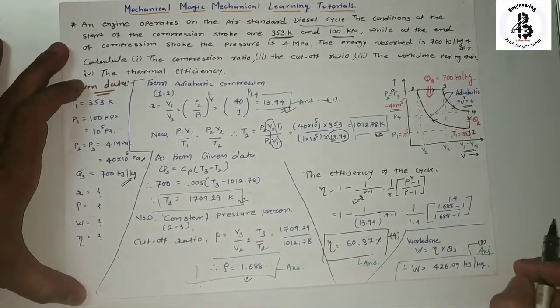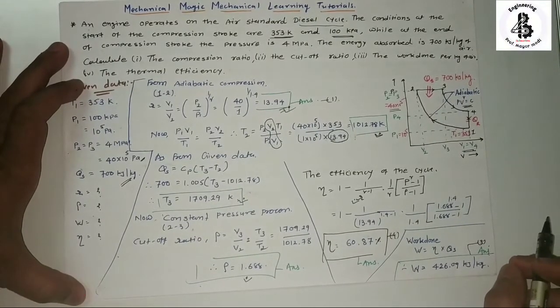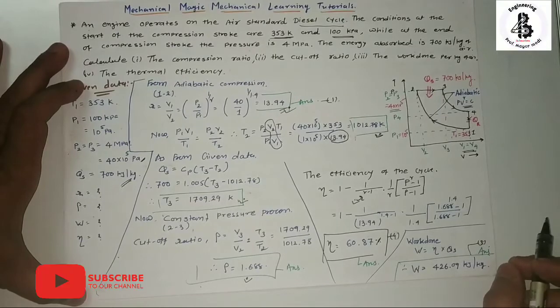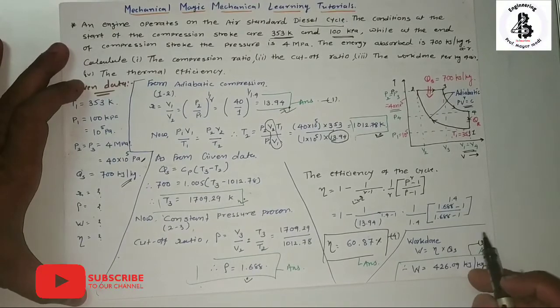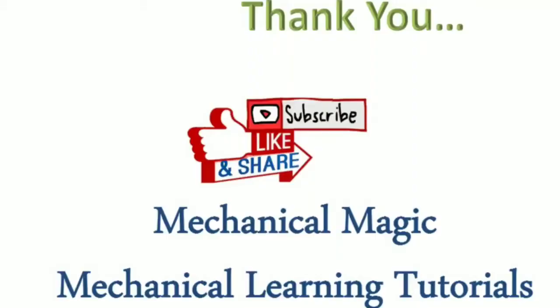This is the simplest approach to calculating the compression ratio, cutoff ratio, work done per kg of air, and thermal efficiency of a Diesel cycle. If you liked it, please subscribe and share — Mechanical Magic Mechanical Learning Tutorials. Thank you.